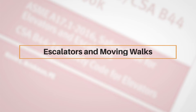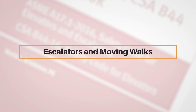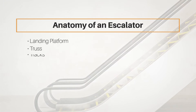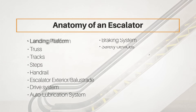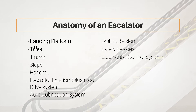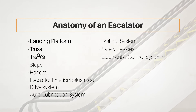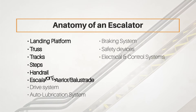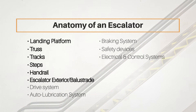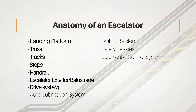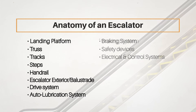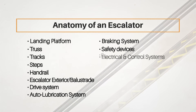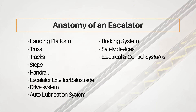First, let's consider the anatomy of an escalator. Escalators can be broken down into 11 basic components: landing platforms, truss, tracks, steps, handrail, escalator exterior or balustrade, drive system, auto lubrication system, braking system, safety devices, and electrical and control systems.